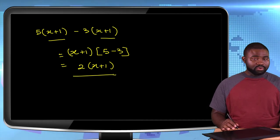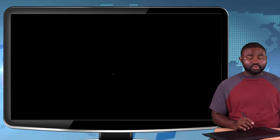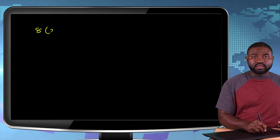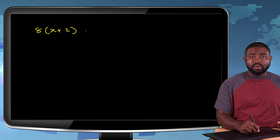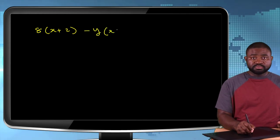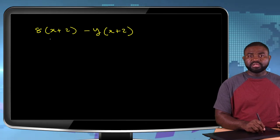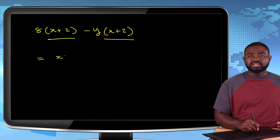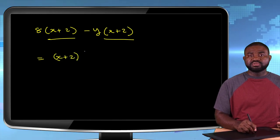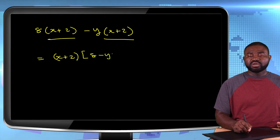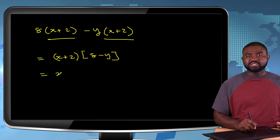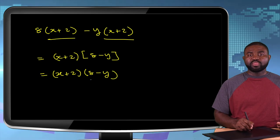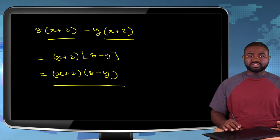Now, another one. Another one would be 8(x+2) - y(x+2). Similarly, the (x+2) is common. So this is the same as we take the (x+2) out and we are left with 8 - y. So the simplified expression is (x+2)(8-y). And that gives us the simplified expression.